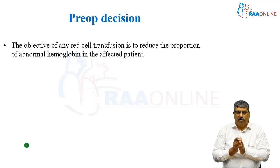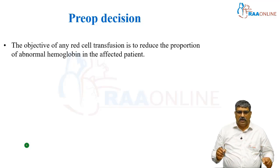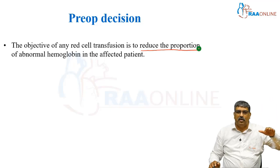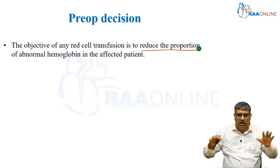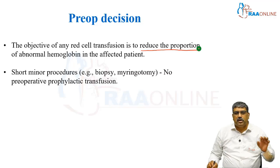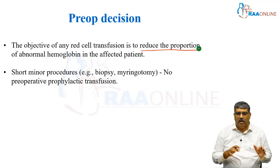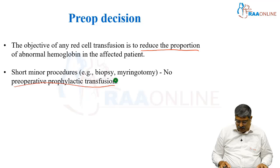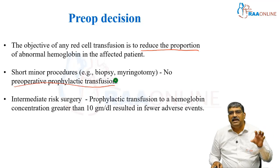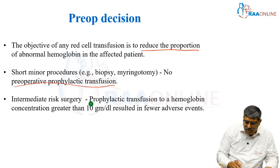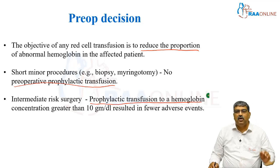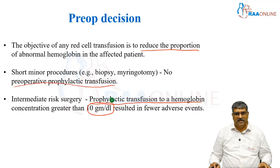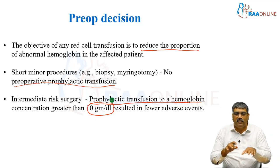The objective of any blood transfusion is to reduce the proportion of abnormal hemoglobin as well as increase the normal hemoglobin. For short minor procedures — for example, a biopsy or a myringotomy — no preoperative prophylactic transfusion is required. If it is an intermediate risk procedure, you have to do a prophylactic transfusion to raise the hemoglobin to greater than 10 grams per deciliter, so that no adverse effect happens.